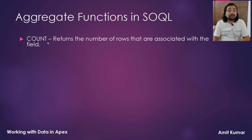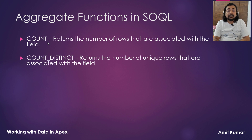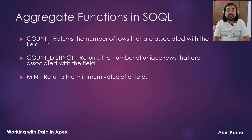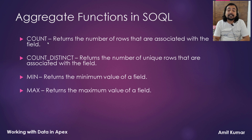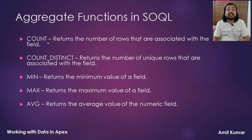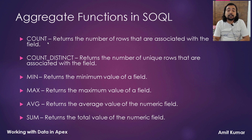Count returns the number of rows associated with the field. Count distinct returns the number of unique rows associated with the field. Min returns the minimum value of a field and max returns the maximum value. Average returns the average value of a numeric field and sum returns the total value of a numeric field. Average and sum can only be used on numeric fields, whereas the rest of the functions are applicable on all types of fields.